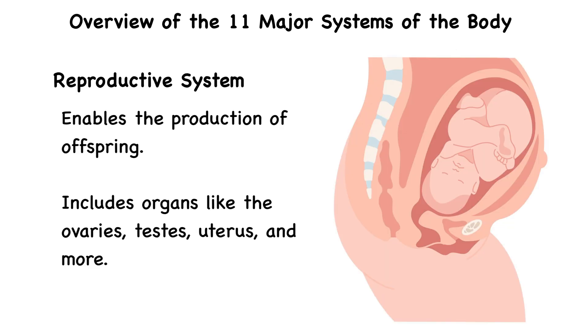And finally, there's the reproductive system. This system enables the production of offspring. It includes organs like the ovaries, testes, uterus, and more.